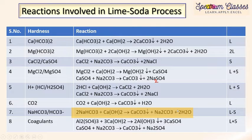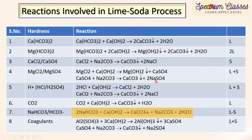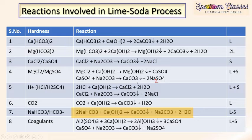Coagulants such as potash alum — commonly known as phitkari — are used in this process. When potash alum reacts with water, fine suspended particles coagulate, forming larger particles that settle to the bottom. Aluminium hydroxide, which is insoluble, gets precipitated. Calcium sulfate formed is further reacted with Na₂CO₃ to produce CaCO₃. The final goal remains to produce Mg(OH)₂ and CaCO₃ to remove excess calcium and magnesium.